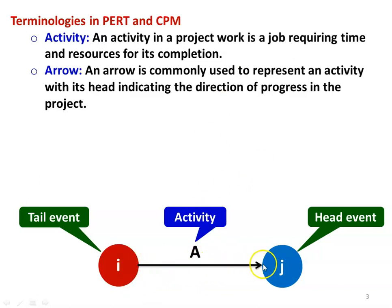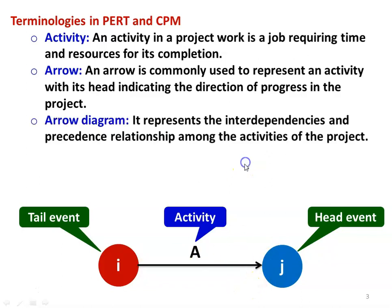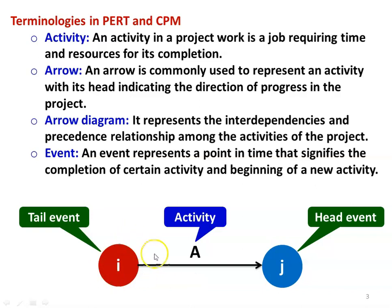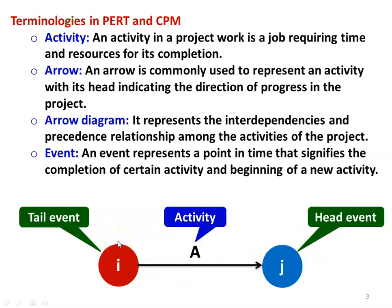There are two events, I and J. I is known as the tail event and J is known as the head event, and this is the direction of progress of the particular activity. Hundreds of activities are connected to complete the entire project work, represented by an arrow diagram. An event represents the point in time that signifies the completion of one activity and the beginning of a new activity. I is the beginning and J is the completion of activity A, from which further activities proceed.